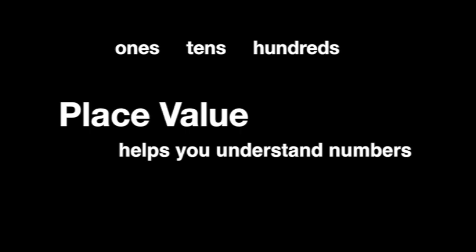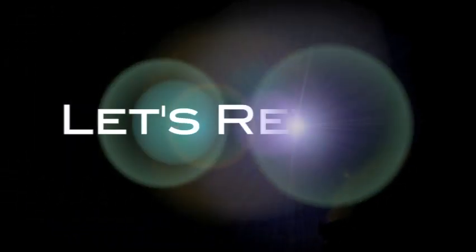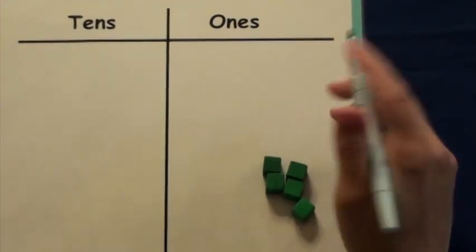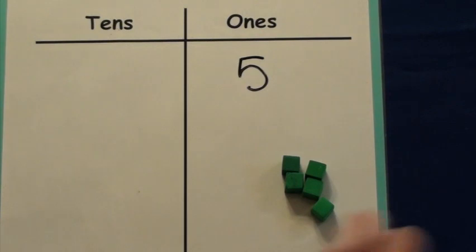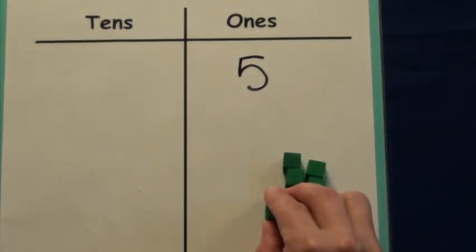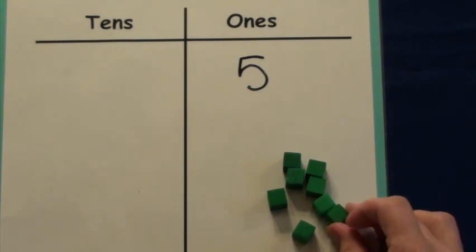There are many more columns, but you'll learn about those in other grades. Here are cubes. Each cube represents one. If you had five cubes, you would have five ones. Here are eight ones.